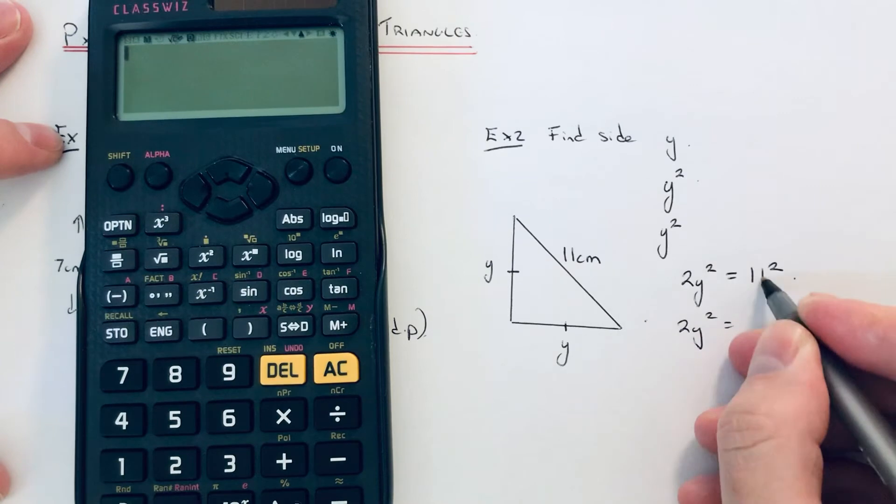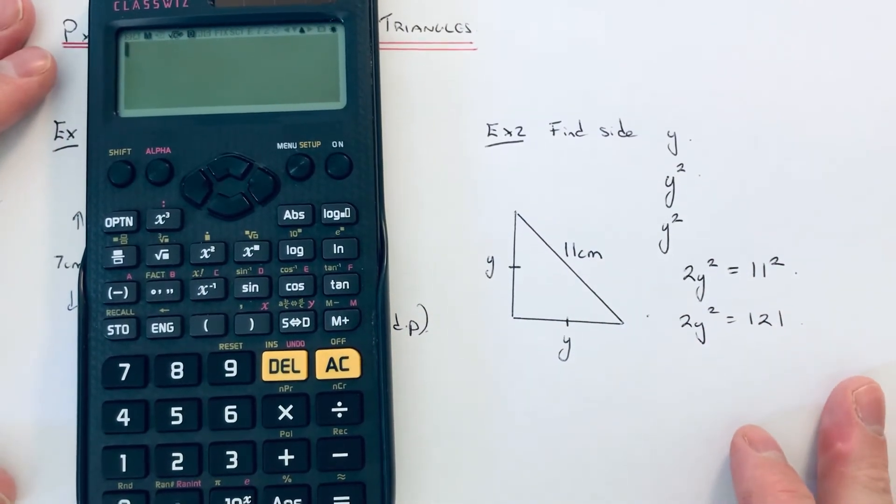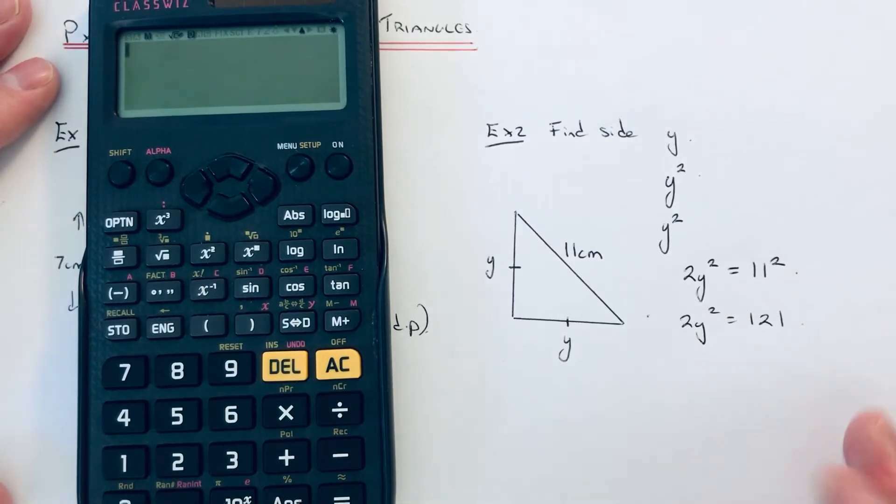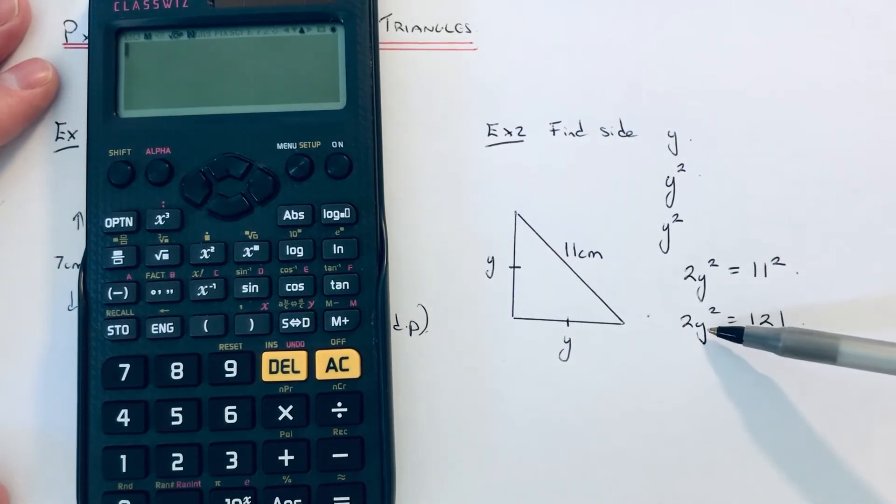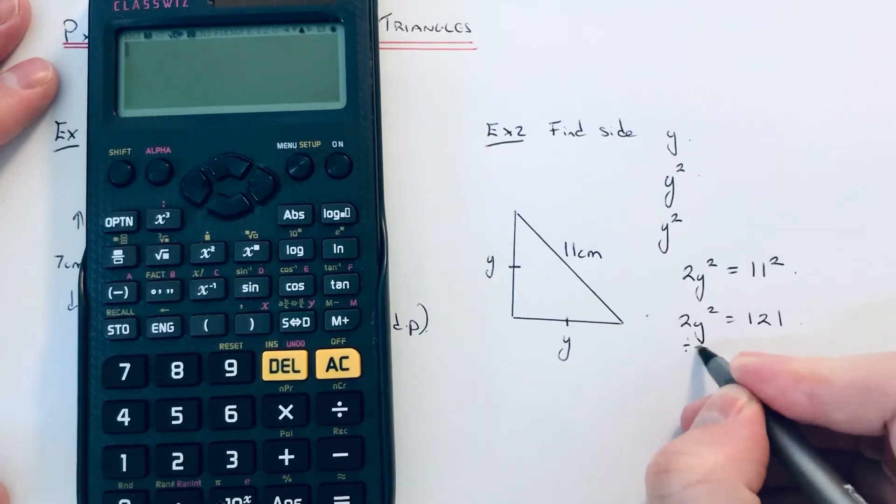This is the equation which we've got to solve. We need to do two opposites: we need to do the opposite to a square and the opposite times two. First of all, divide by two.